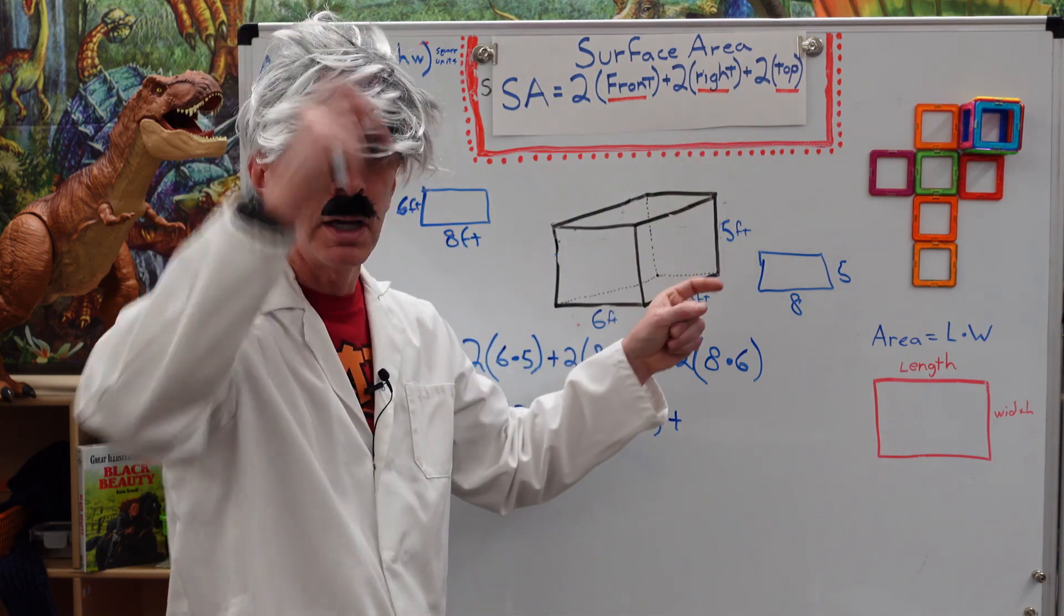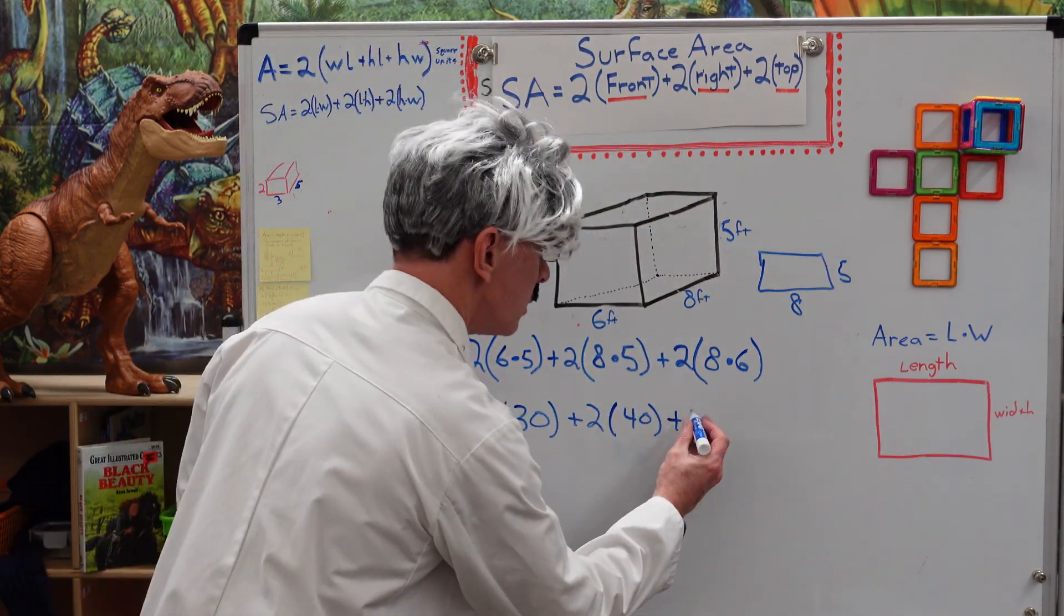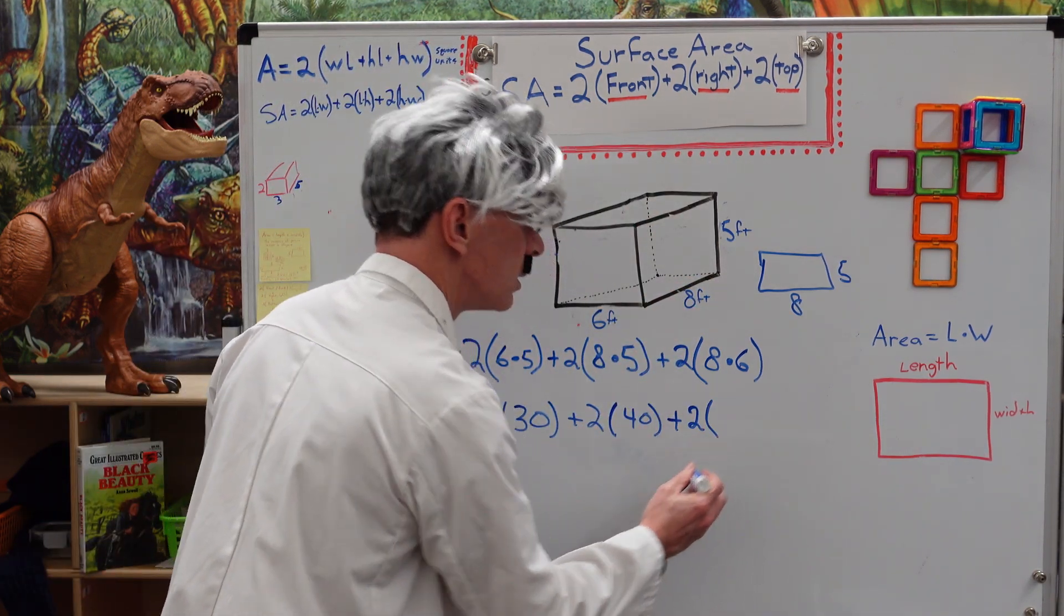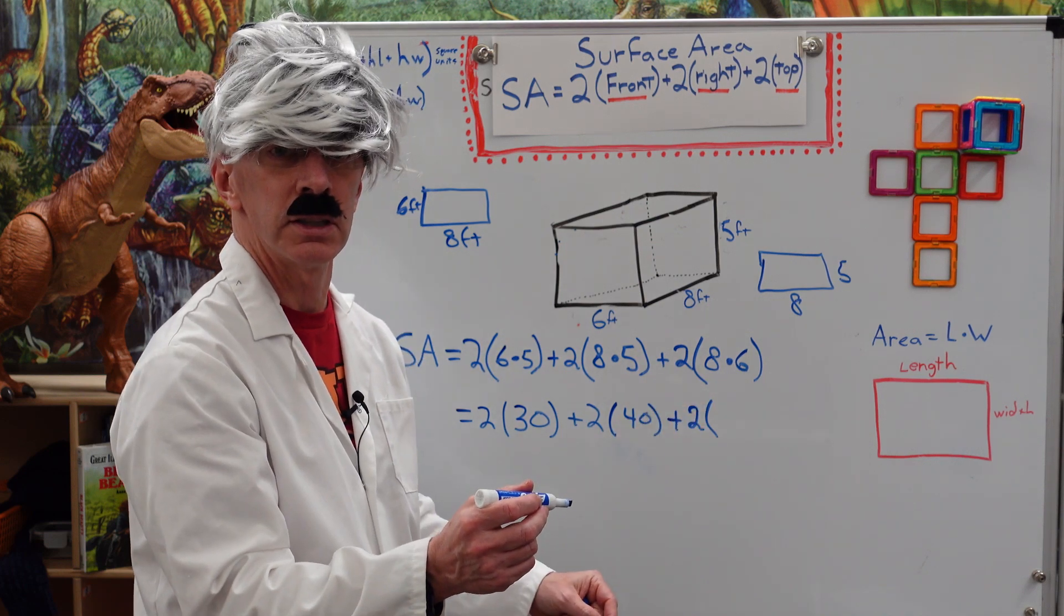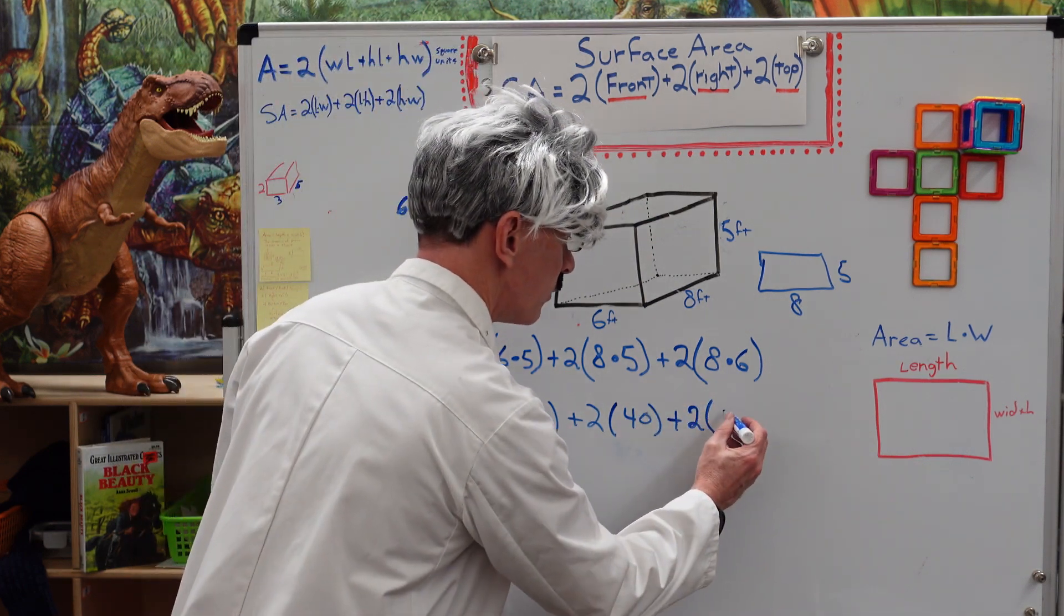Plus, the top and the bottom. So, I put 2 times 8 times 6. Do you know what that is? 8 times 6? 48.